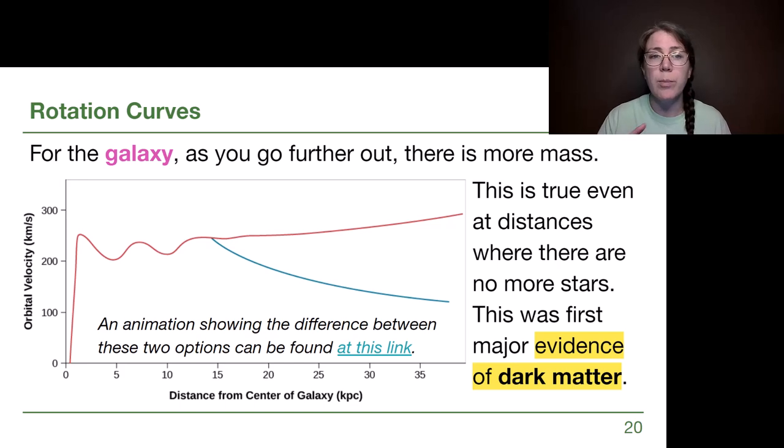So when we think about the galaxy, we would expect that if we run out of stuff, we have that same drop-off. The blue curve shows that same exact drop-off that we expect to have if once we no longer see stars and gas and dust, we would simply be moving away from the same amount of mass.